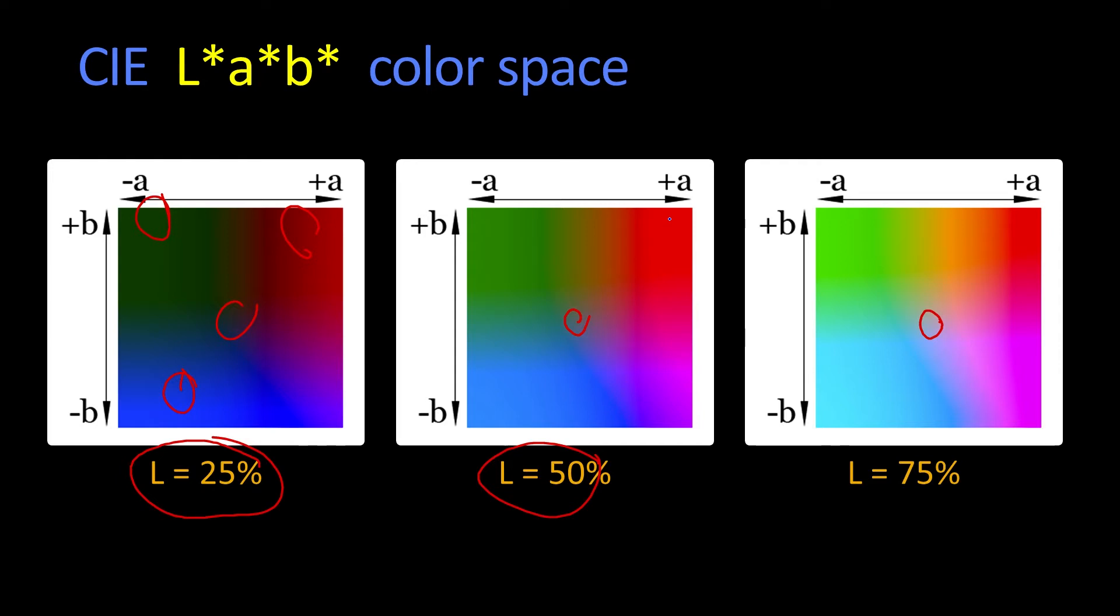That's called the LAB color space. The idea is that you've got luminance, you've got how saturated the color is, and actually what we call the color, but what is typically referred to as the hue.